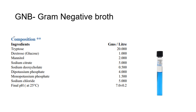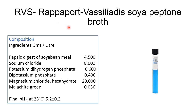Next is RVS, which stands for Rappaport Vassiliadis Soya Peptone Broth. Composition includes peptic digest of soybean meal, sodium chloride, potassium dihydrogen phosphate, dipotassium phosphate, magnesium chloride hexahydrate, and malachite green, at a final pH of 5.2, which is slightly acidic. This broth is recommended for selective enrichment of Salmonella from pharmaceutical products and can be used in direct enrichment of samples containing low inoculum. This medium is a modification of Rappaport Vassiliadis enrichment broth, with the addition of magnesium chloride.